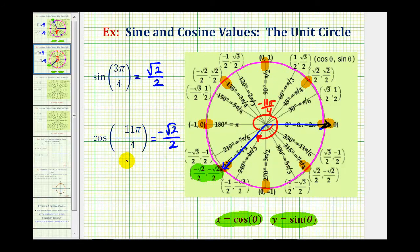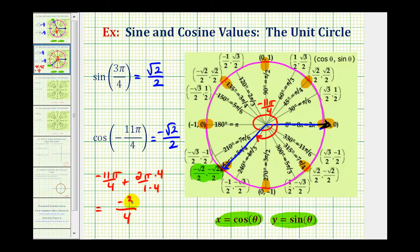We could have used an angle coterminal with negative 11 pi over four radians to determine this function value — meaning we could have added multiples of two pi radians to find the same function value. For example, negative 11 pi over four plus two pi gives us a common denominator of four, so negative 11 pi plus eight pi equals negative three pi over four radians, which has the same terminal side. Or we could add another two pi radians to find a positive angle with the same cosine function value. So we can use coterminal angles to find these function values.